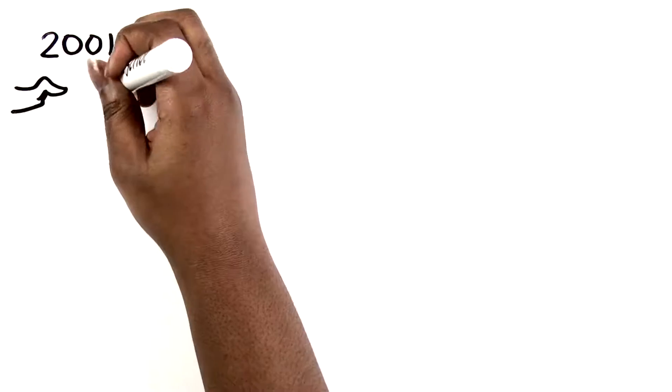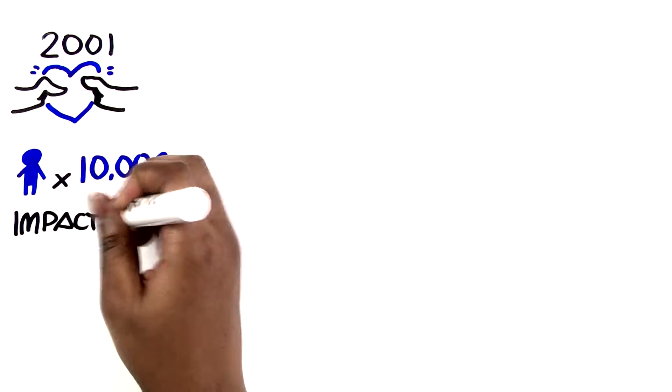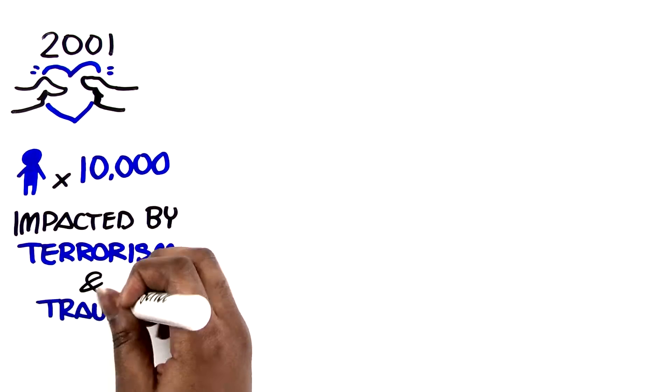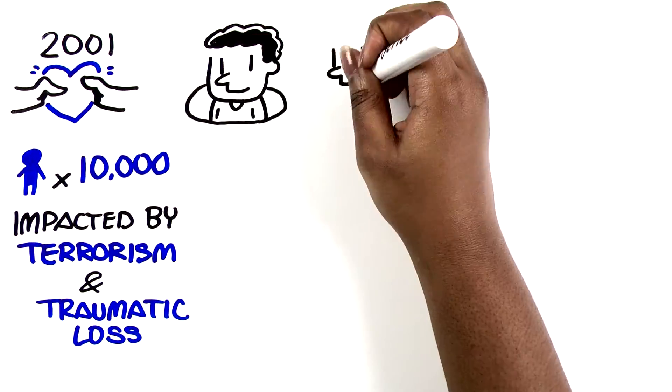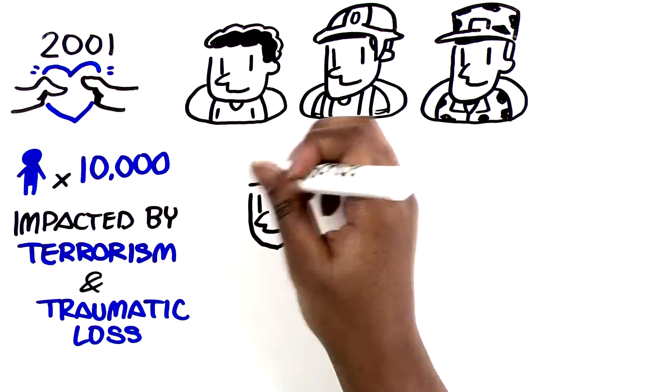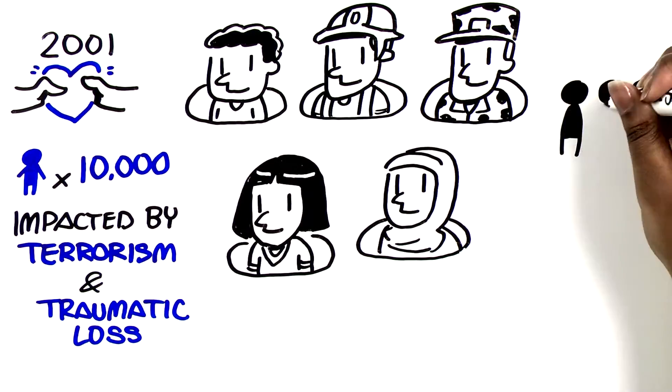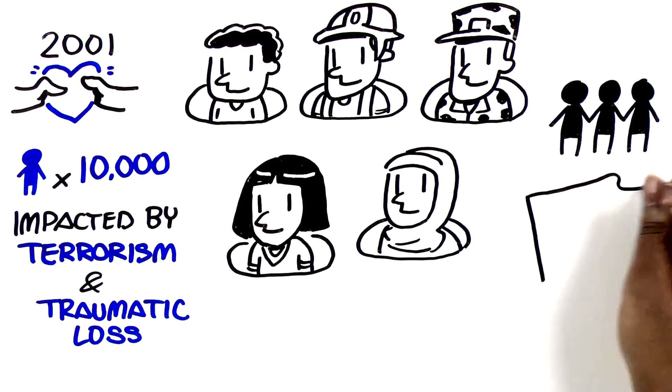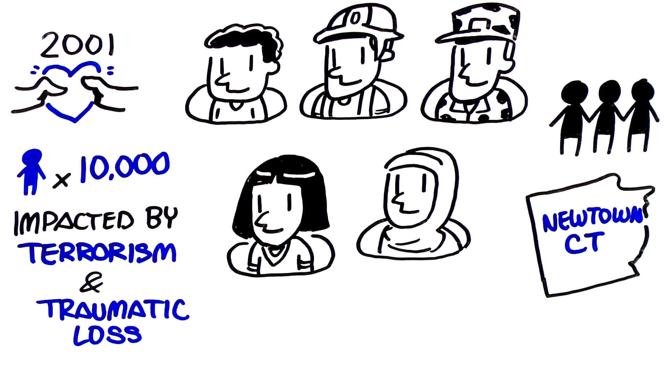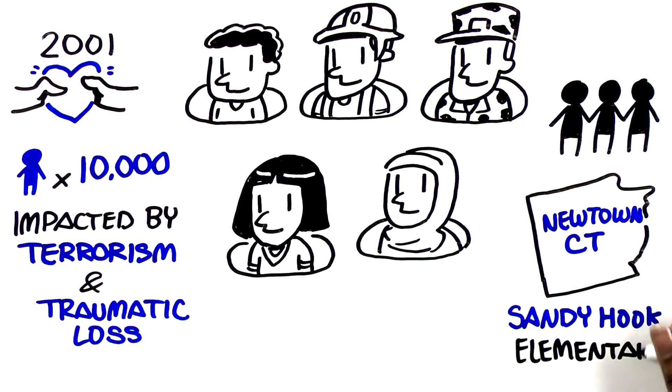Since 2001, Tuesday's Children has helped more than 10,000 individuals impacted by terrorism and traumatic loss, including families of 9-11 victims, responders, and military service members, global victims of terrorism, and local communities recovering from tragedy, such as the greater Newtown, Connecticut community affected by the 2012 shooting at Sandy Hook Elementary.